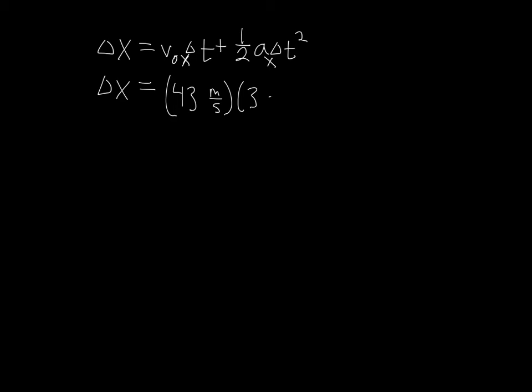Times my change in time. My change in time, I had three seconds, and I'm being explicit with writing out my units, just to show that they actually cancel out to do some dimensional analysis, plus one half my aₓ, in this case, is zero meters per second squared, times my change in time, which is three seconds quantity squared.